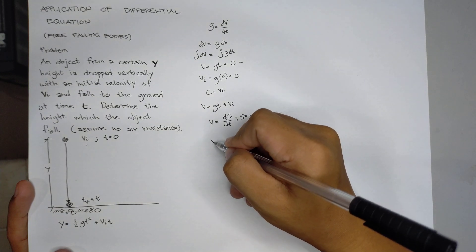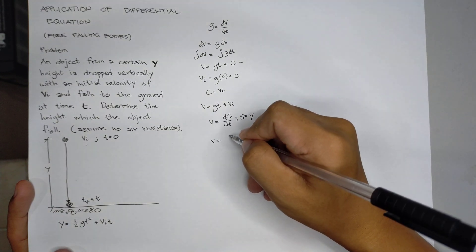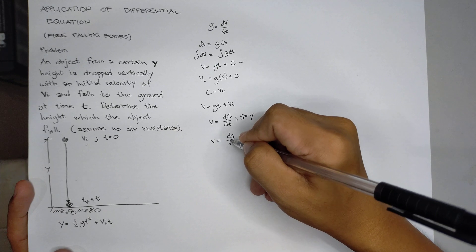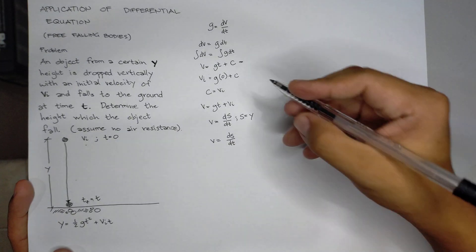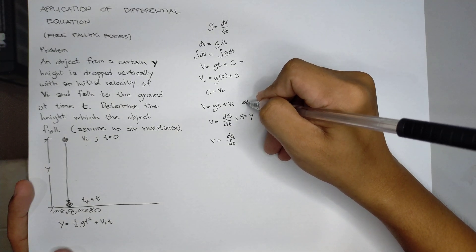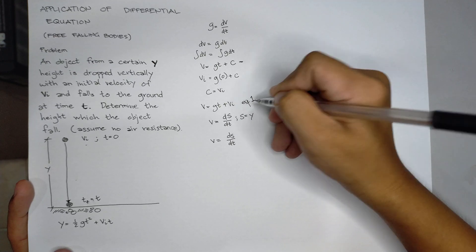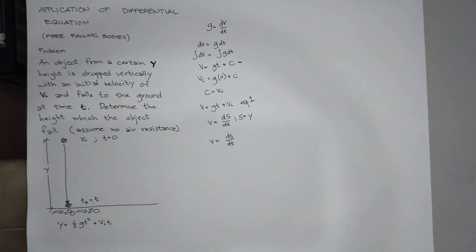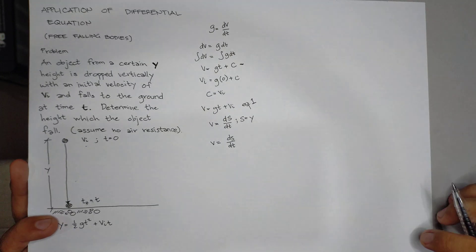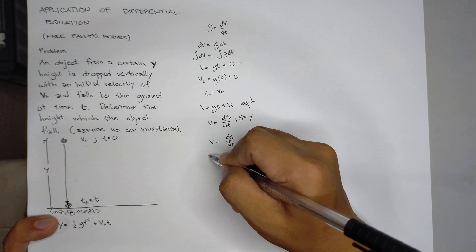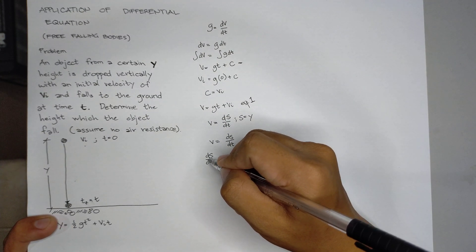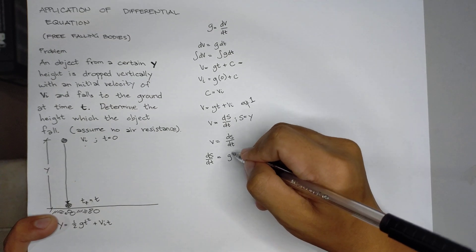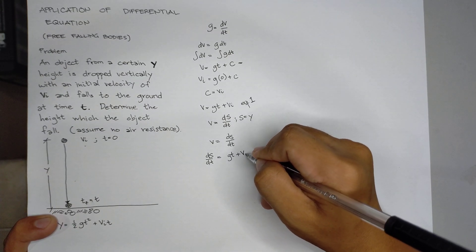From there, velocity is equal to ds over dt. Our v here, let's call this equation 1. Our v here is equation 1, which is ds over dt equals to g t plus vi.